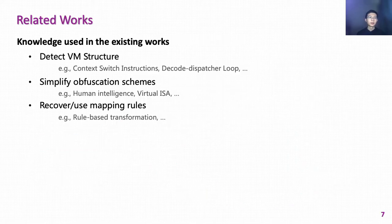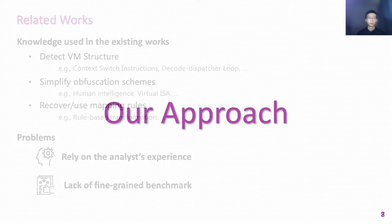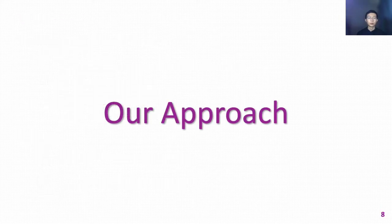To address these challenges, the existing de-obfuscation works mainly perform three steps, from detecting VM structure to recovering mapping rules. But they all have to rely on knowledge-based algorithms. Therefore, the effectiveness of these research works depends on the security analyst's knowledge. They also need fine-grained benchmarks for systematic evaluation.